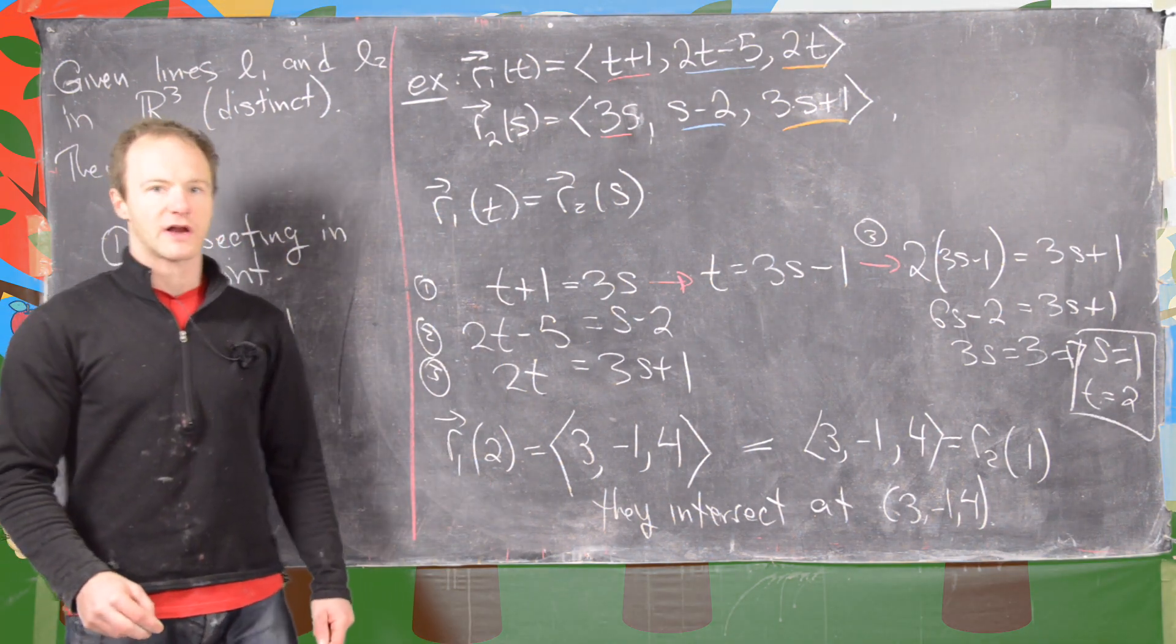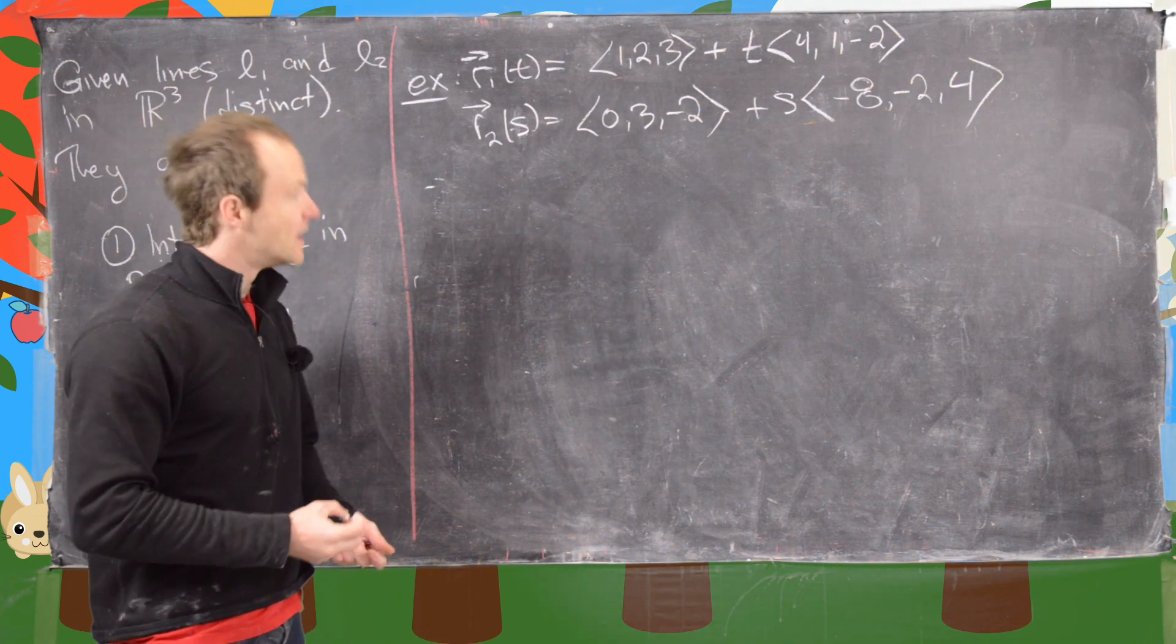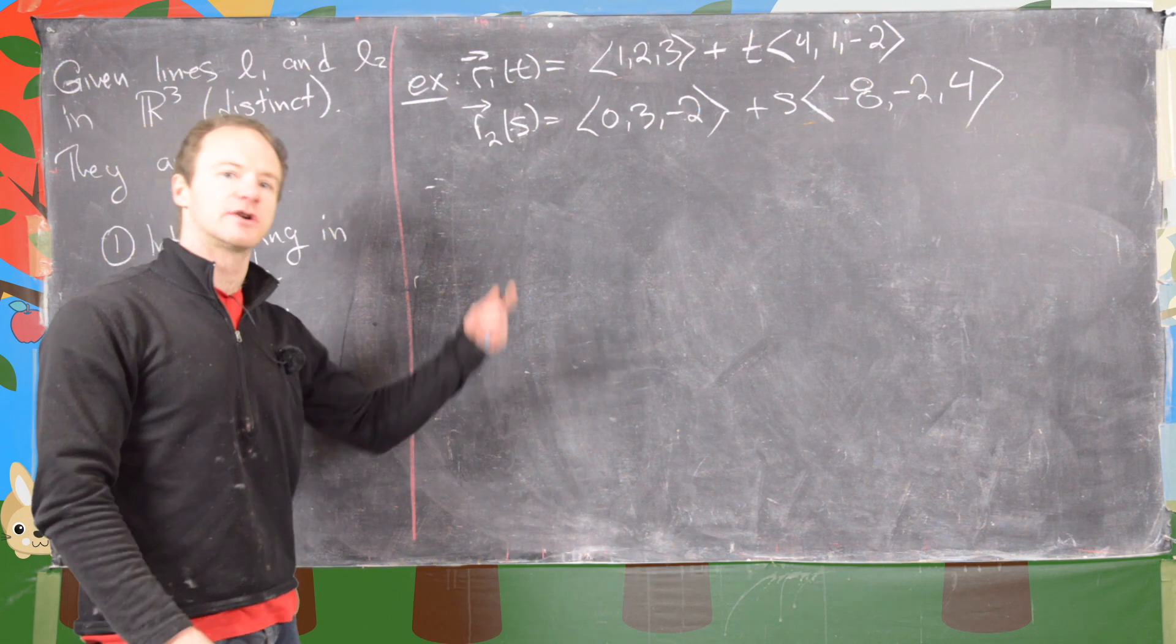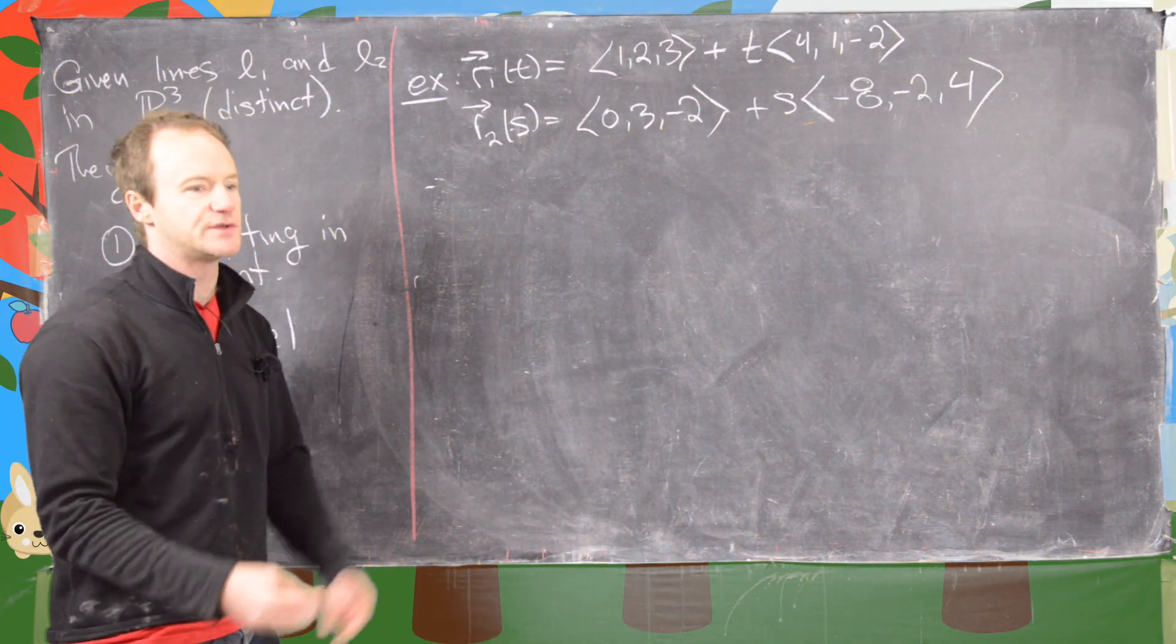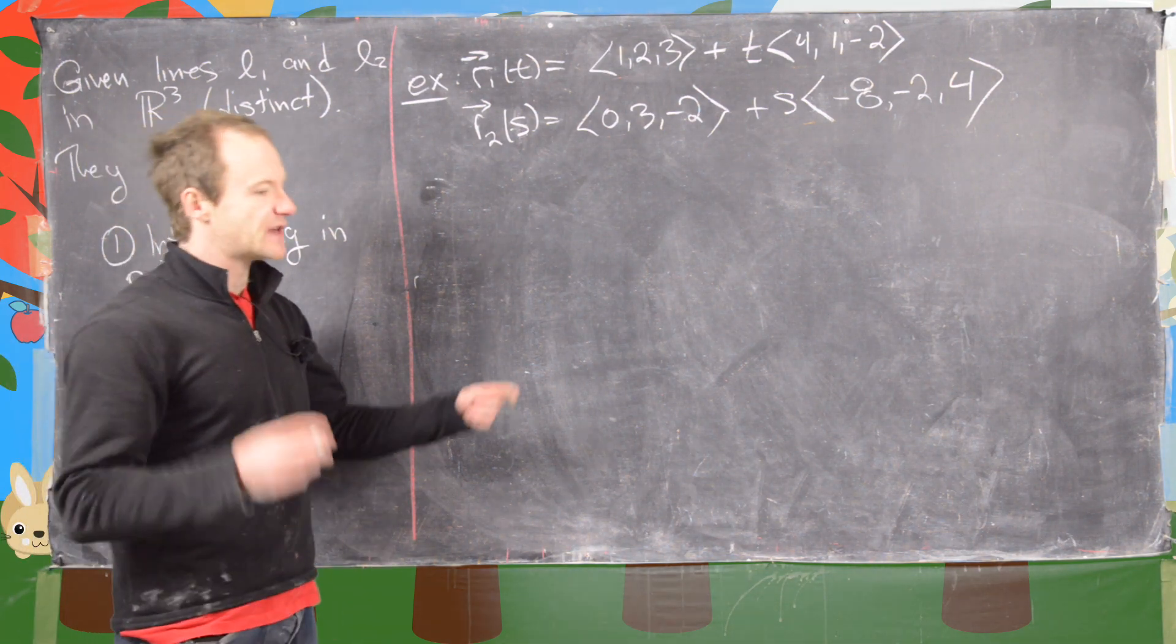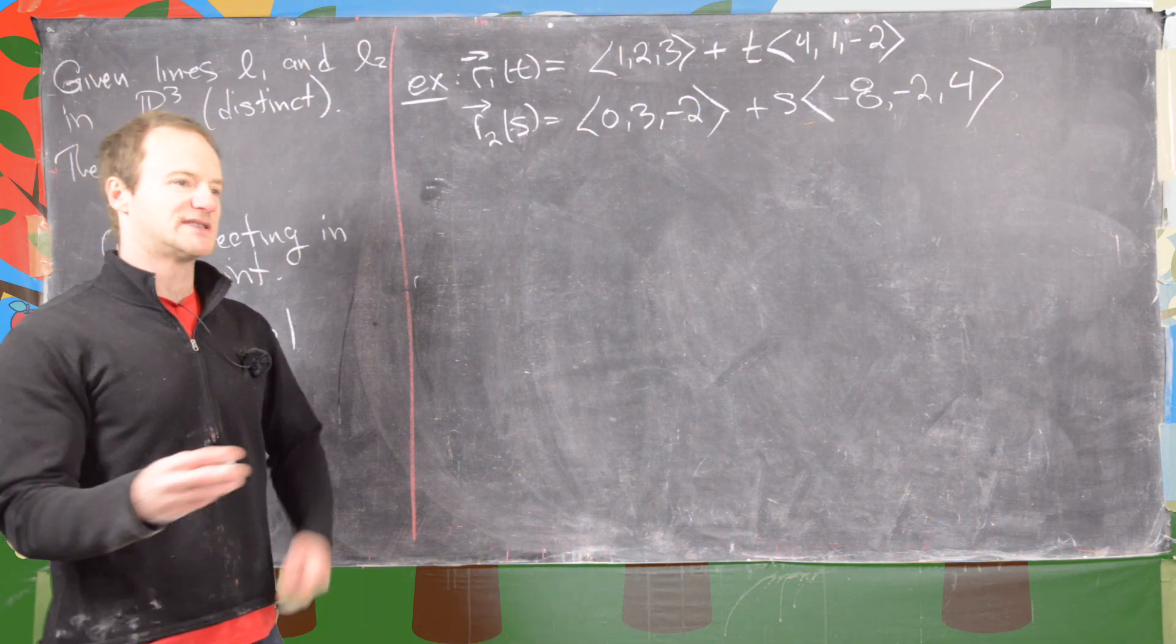I'll clean up the board and we're going to look at another example. So let's say we have R1 of T given by that vector equation. Notice I've written it a little bit differently just to get used to seeing different notations. R2 of S equals that vector equation.